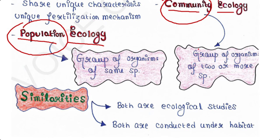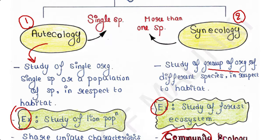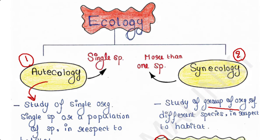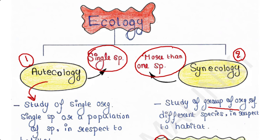Therefore, in one sentence: autecology deals with a single species, whereas synecology deals with more than one species.